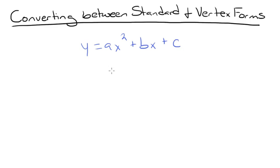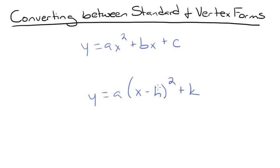Vertex form of a quadratic equation is y equals a times x minus h squared plus k, where a, h, and k are real numbers, a does not equal zero, and the point (h, k) is the vertex of the parabola.